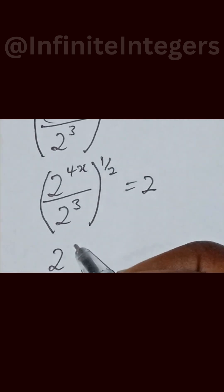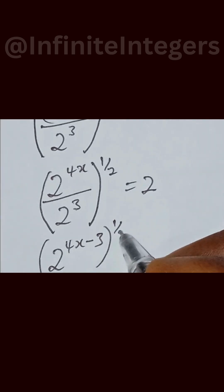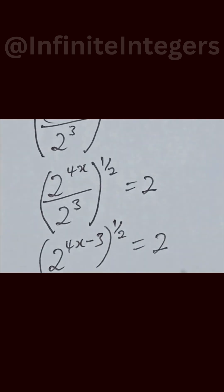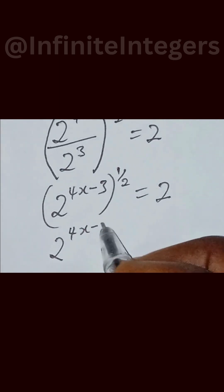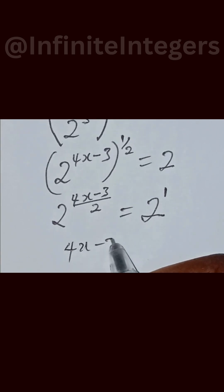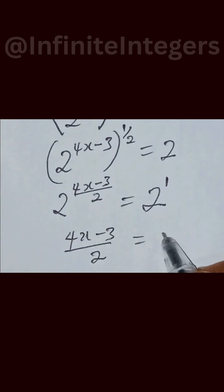Then we have 2 raised to power 4x minus 3, close the bracket, raised to power half, equal to 2. Then we have 2 raised to power 4x minus 3, over 2, equal to 2, and this becomes raised to power 1. Then we have 4x minus 3 over 2 equal to 1.